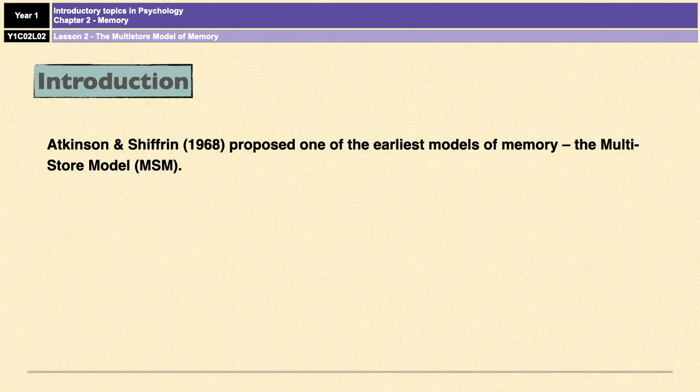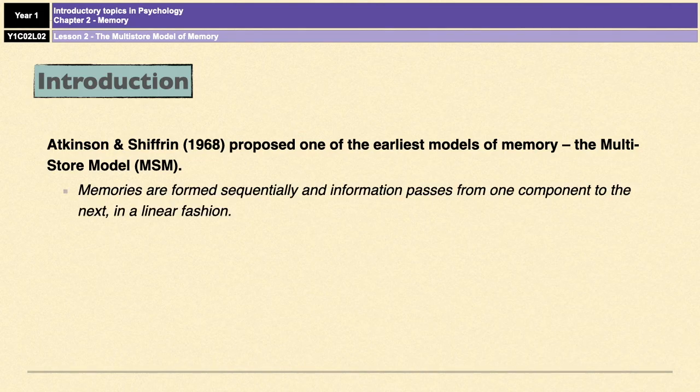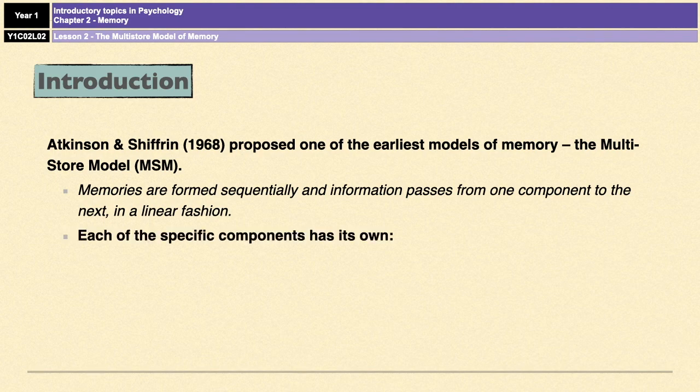The multi-store model suggests that memories are formed sequentially and that information is passed from one component in the model to the next in a linear fashion. It also suggests that each specific component has its own type of coding, its own capacity, and its own level of duration.